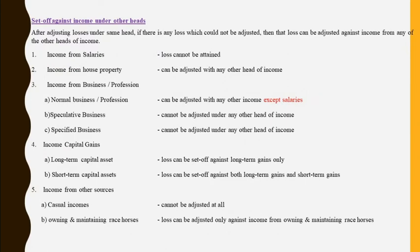Moving on to the next one — set-off against income under other heads. So far we were seeing adjustment within the same head. Now, adjusting outside the head means: after adjusting income within the same head, if there is still a loss remaining, that loss can be brought outside that head and adjusted with other heads of income. For example, if there is a loss from house property and you do not have sufficient income to adjust it within the head house property, you can bring it outside the head and adjust it with salaries, business income, capital gains, or other sources. This is called set-off against income under other heads of income.